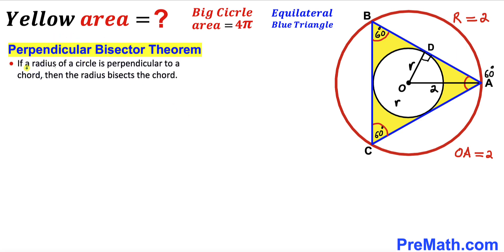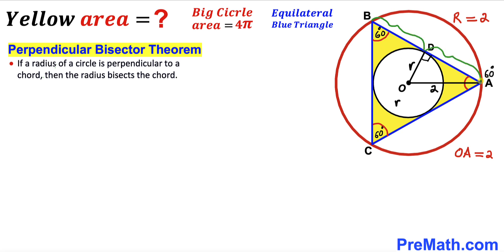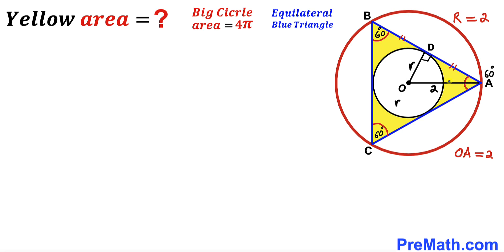Recalling the perpendicular bisector theorem: if a radius of a circle is perpendicular to a chord, then the radius bisects the chord. Here AB is the chord and OD is the radius, so segment BD equals segment AD. We can also observe that OA is the angle bisector of angle CAB, so this angle is 30 degrees and likewise the other part is 30 degrees as well.